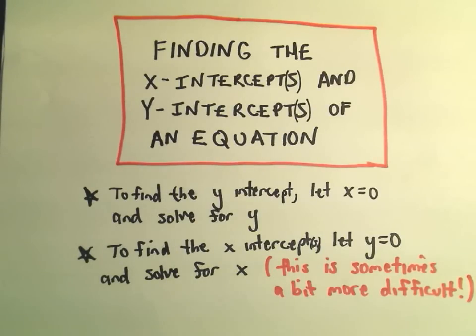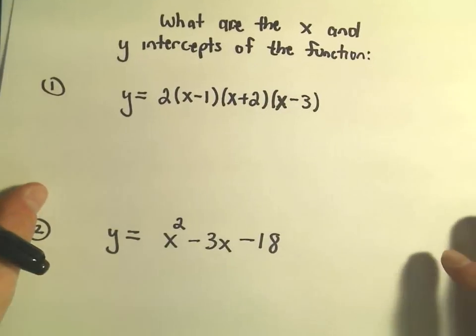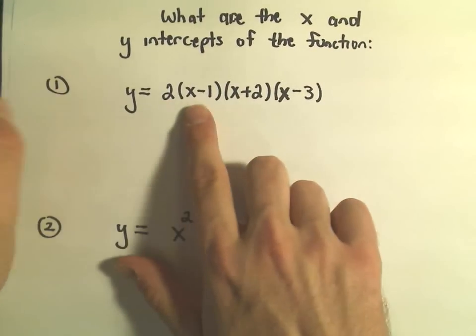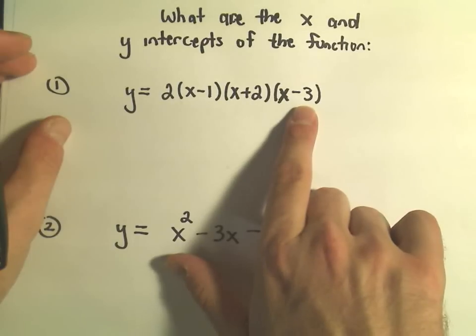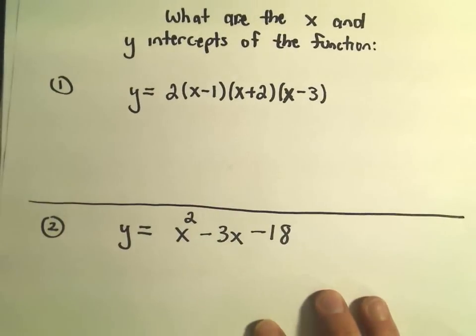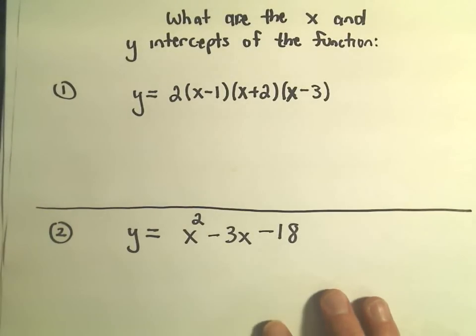Let's do two examples. Suppose we want to know the x and y-intercepts of the function y equals 2(x-1)(x+2)(x-3). In our other example, we'll have y equals x squared minus 3x minus 18.